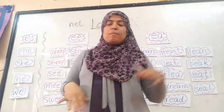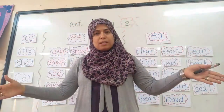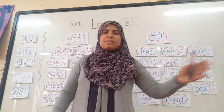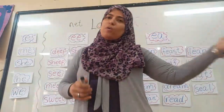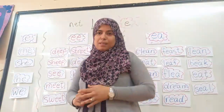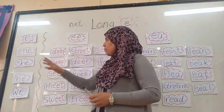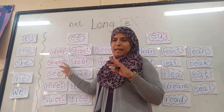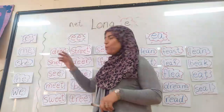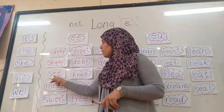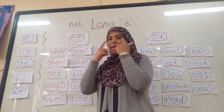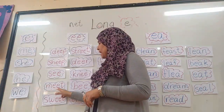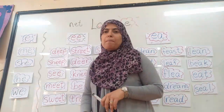In the swimming pool, there are two parts — a shallow part and a deep part. If you know how to swim, you can go swim in the deep side. Next: S-H-E-P: sheep. This is the sheep. Next: S-H-E: see. I can see with my eyes. Then M-E-T: meet.